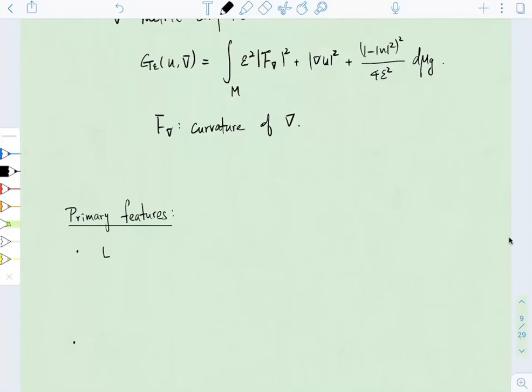First of all, it has a gauge invariance. For all S1-valued functions from your manifold, or let me say U1, the functional is invariant under the following action. You can rotate your section, and then subtract this one form from your connection. And then leaves the value of the functional invariant.